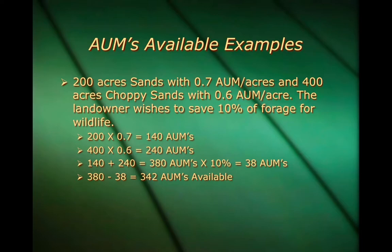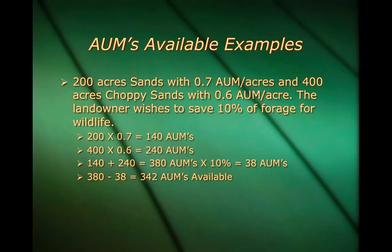Here's an example with wildlife forage saved. The landowner has 200 acres of sands yielding 0.7 AUMs per acre and 400 acres of choppy sands yielding 0.6 AUMs per acre. The landowner wishes to save 10% of the forage for wildlife. We take 200 times 0.7 which is 140 AUMs, plus 400 times 0.6 which is 240 AUMs, for a total of 380 AUMs. Ten percent of 380 is 38 AUMs saved for wildlife, leaving 380 minus 38 equals 342 AUMs available for livestock.